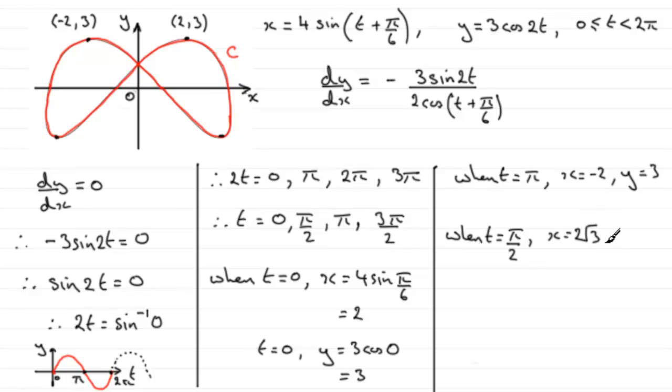and again I'm going to leave that for you to check out, and y turns out to be equal to minus 3. So clearly, that is this point over here, 2 root 3 comma minus 3.